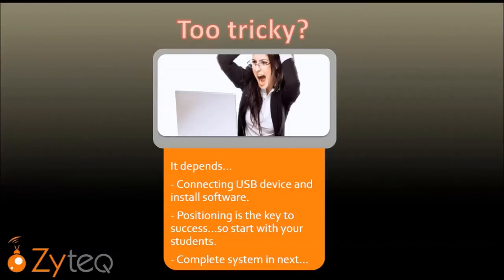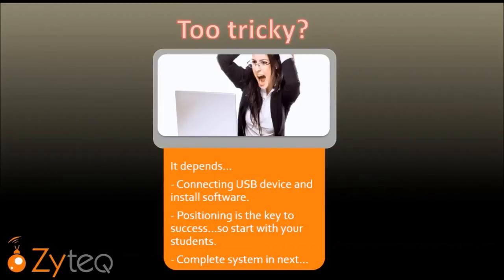Is it coming together for you? Essentially the equipment setup requires connecting a USB device — the eye gaze camera — and installing the software. Combining this with the computer requires technical skills, and positioning of the system is really the key to success. So if you start with your students' needs, the most suitable equipment options should follow. To bypass all of this, we offer complete systems — all set up, designed for purpose, ready to use.